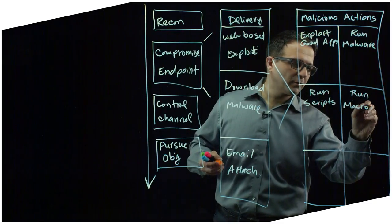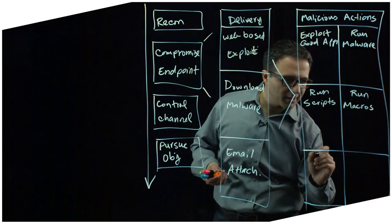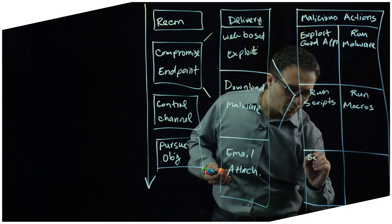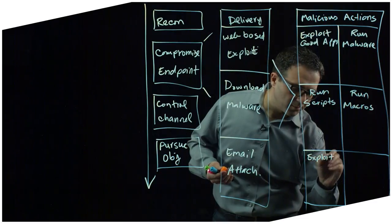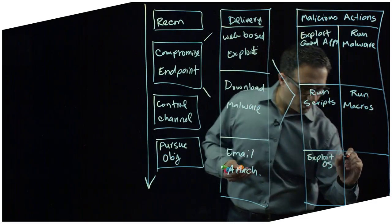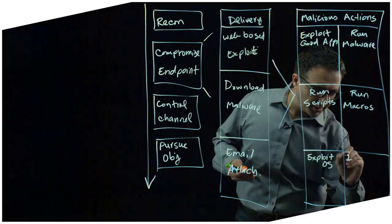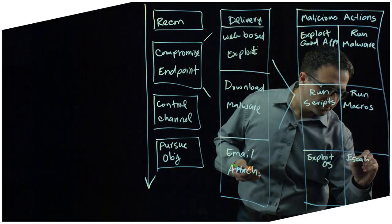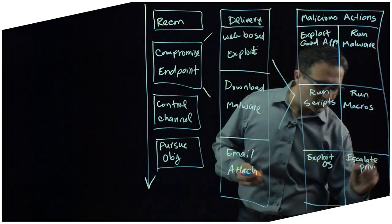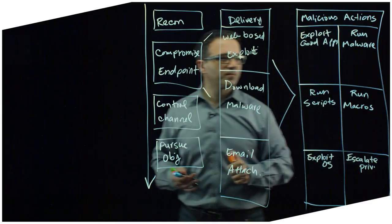These would be macros that are embedded in Microsoft Word and Excel documents. And they can try to exploit the operating system itself or escalate their privileges so they can gain access to system level resources. So this overall is how the attackers try to compromise an endpoint.